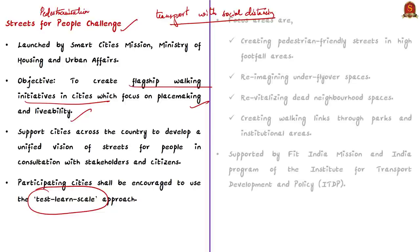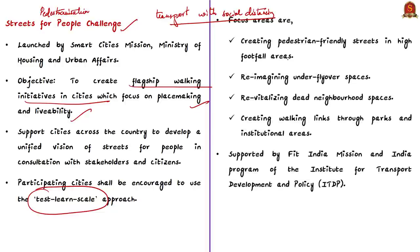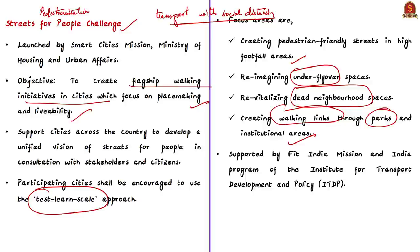All cities participating in the challenge shall be encouraged to use a test-learn-scale approach. The interventions include creating pedestrian-friendly streets in high footfall areas, reimagining under-flyover spaces, revitalizing dead neighbourhood spaces, and creating walking links through parks and institutional areas. The challenge is not limited to smart cities — cities with population over 5 lakh and capital cities can also participate.